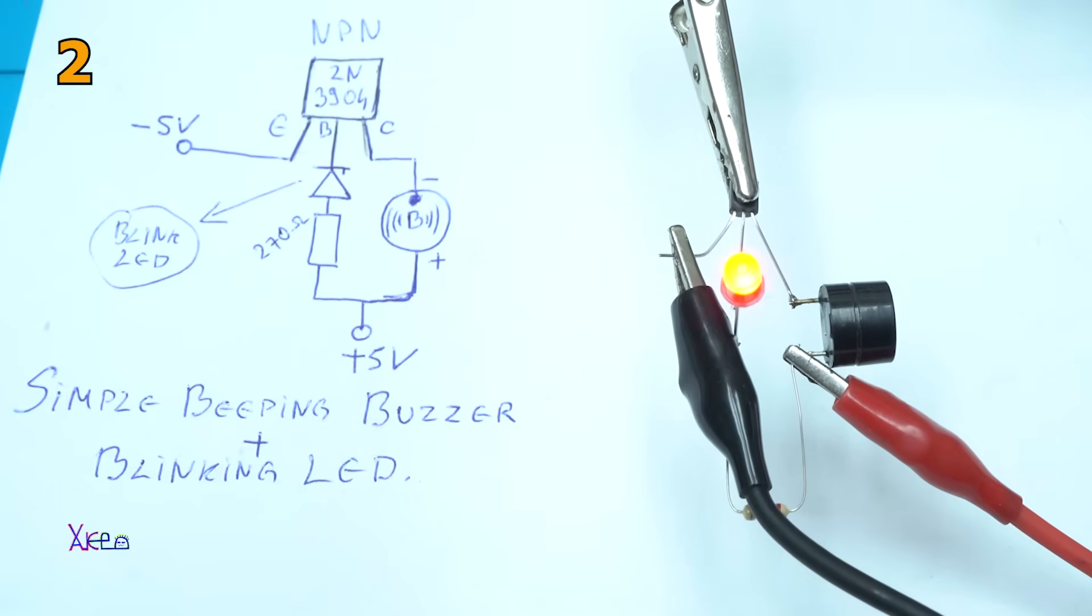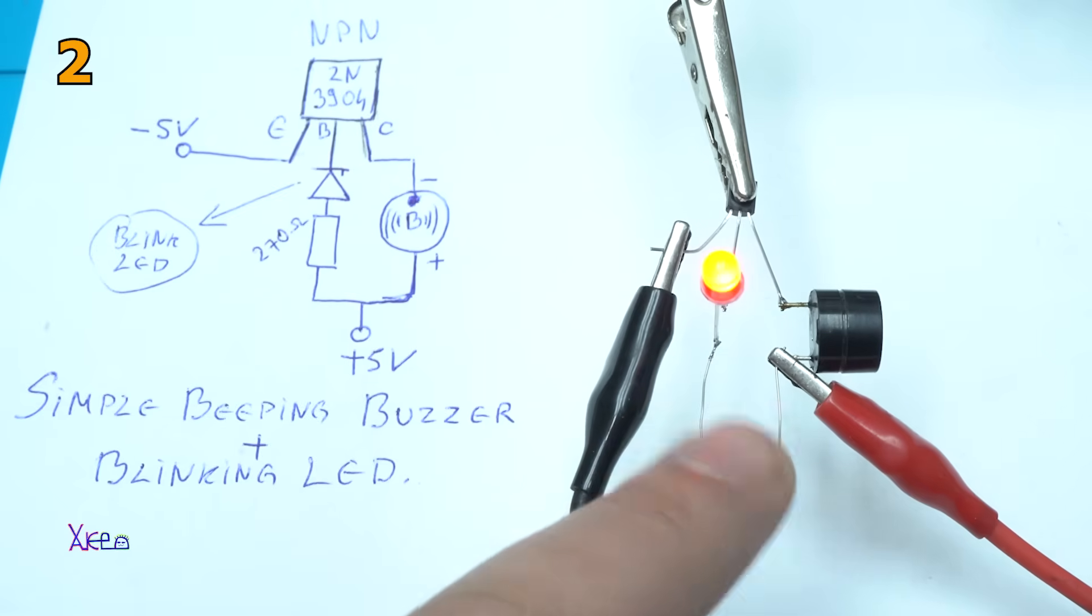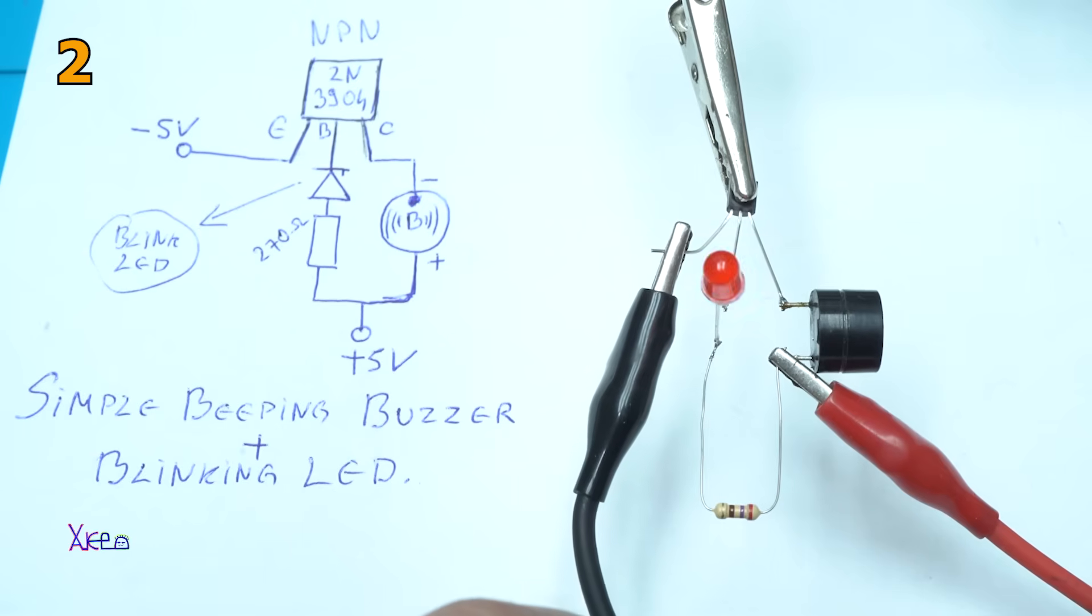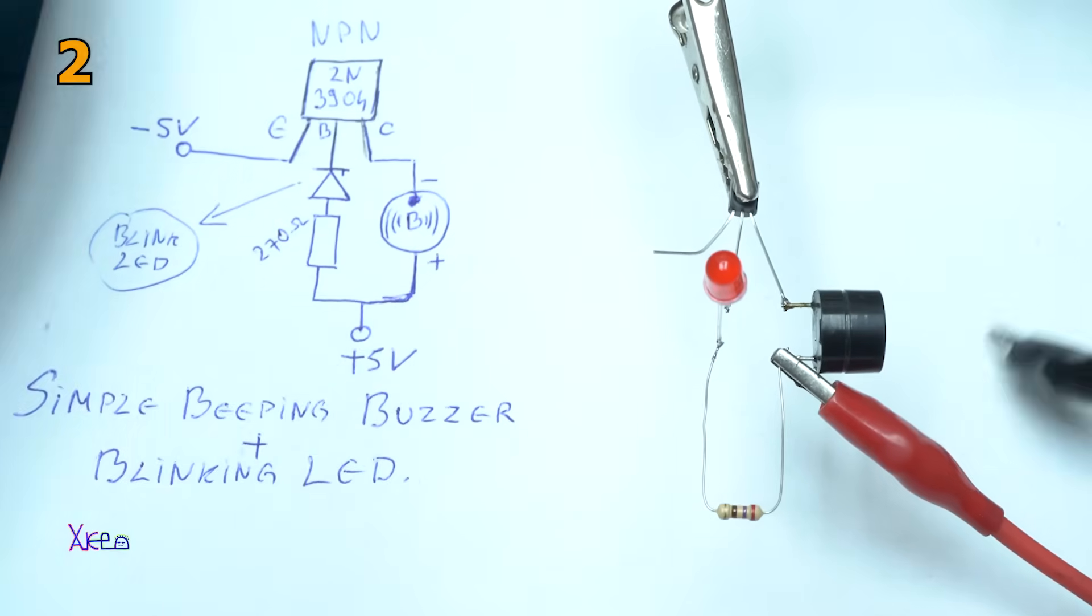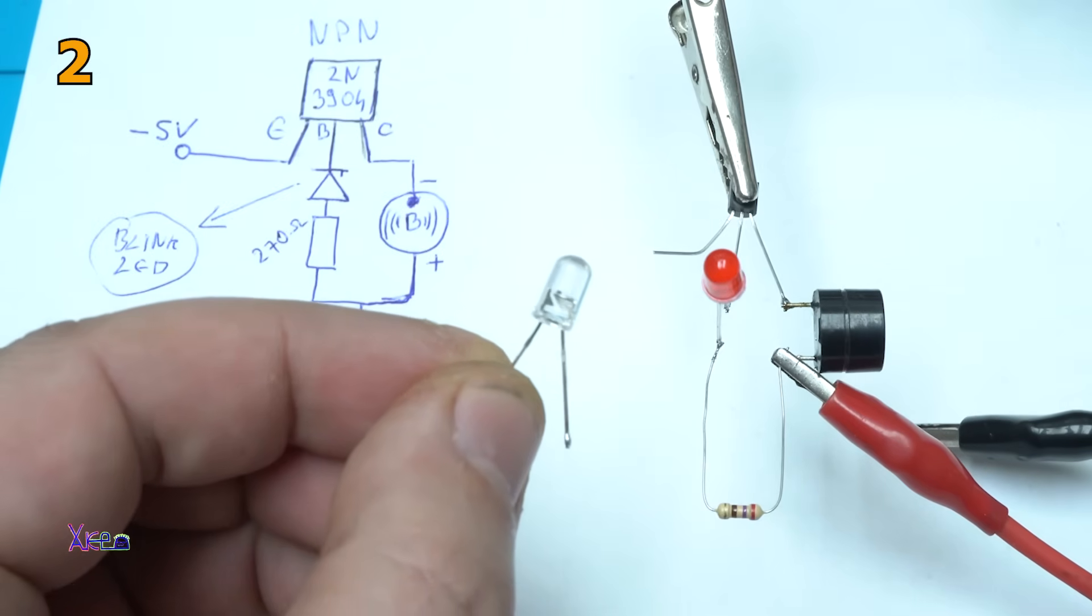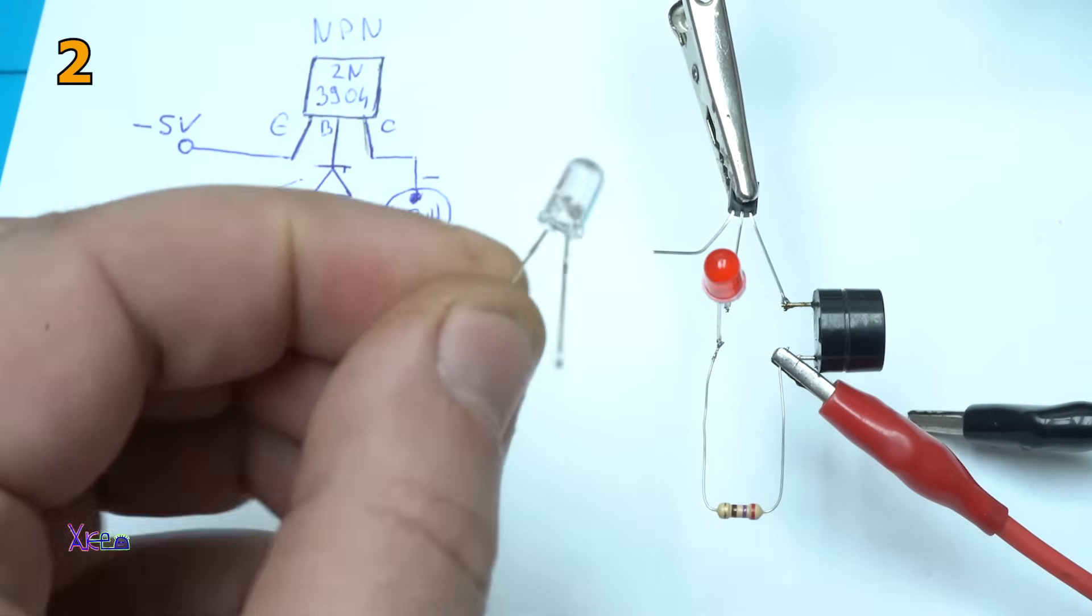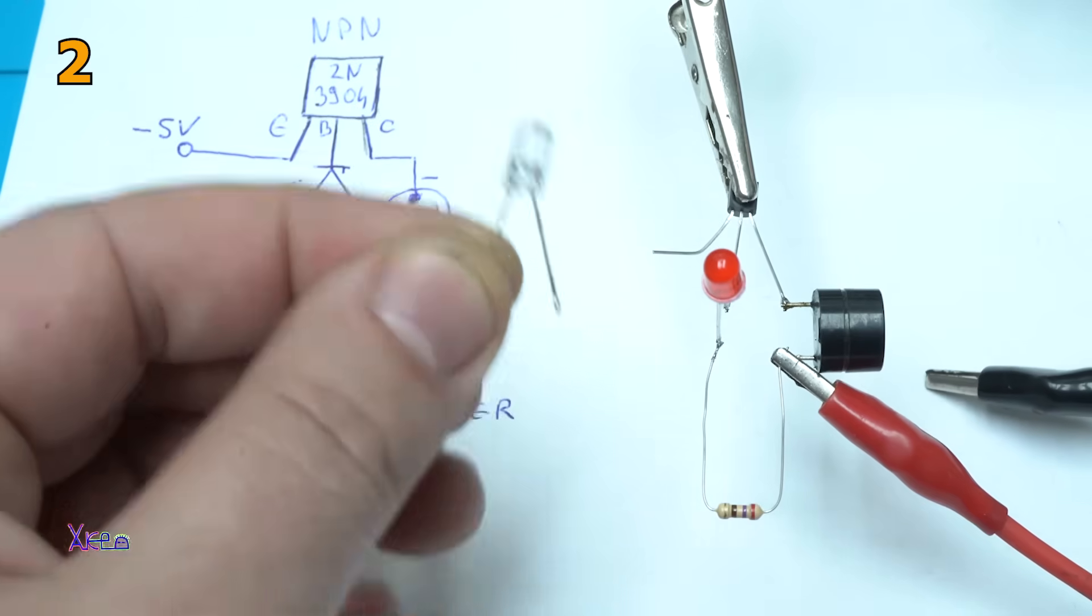You can hear it because the self-blinking LED makes it turn on and turn off the base of the transistor, so we get that beeping sound. It's a very simple circuit using four components. But now I'm gonna use this LED which is RGB self-blinking LED with a couple of effects. Let's try this one.